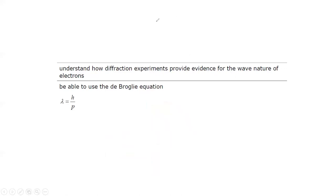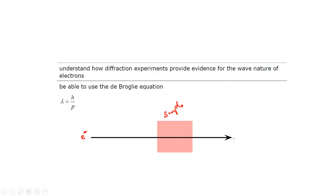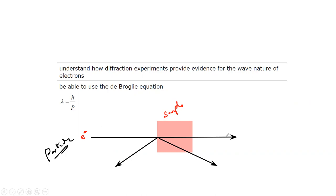Since the electron is a particle, if we accelerate an electron towards a crystal lattice, we would expect it to either pass straight through, deviate from its path, or bounce back — these are the expected behaviours for a particle.